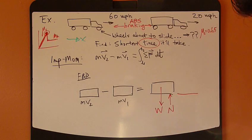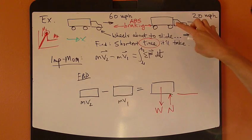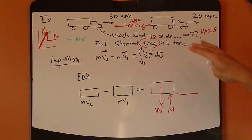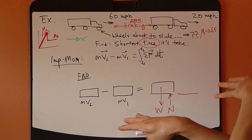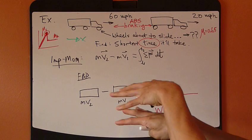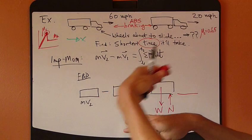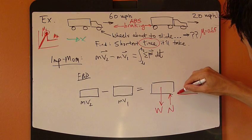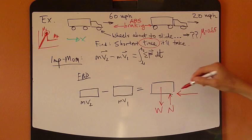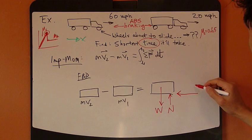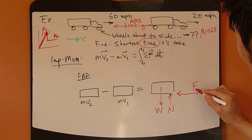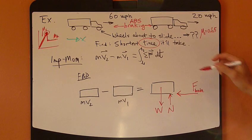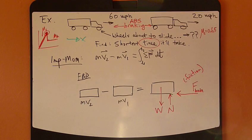Friction force opposes any potential relative motion between your particle and the surface. In this case it's not sliding, but if it were to slide, it would slide to the right relative to the ground. So the potential sliding motion is that the truck goes to the right, so my friction force goes to the left. It's opposite that. So this is my friction force, which is really braking force to the right.